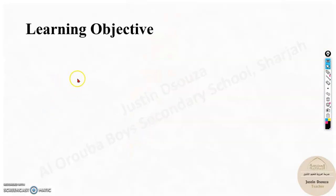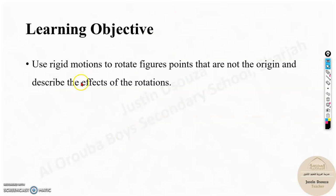The learning objective here, the only one of this lesson is: use rigid motions to rotate figures, points that are not at the origin. See, this is very important. It's not in the origin and we should describe the effects of rotations.